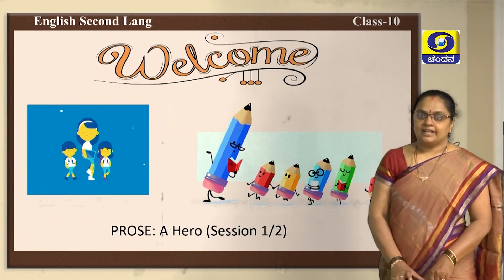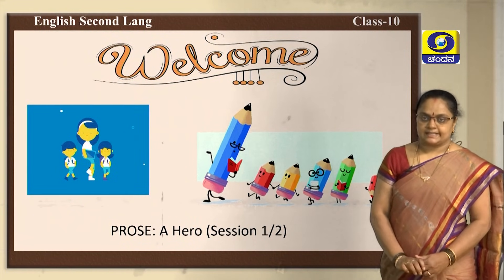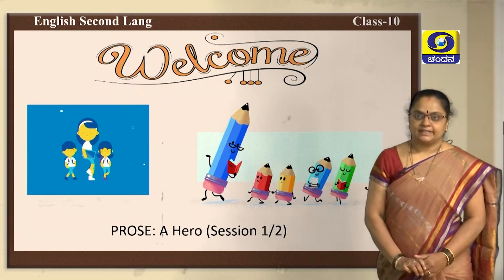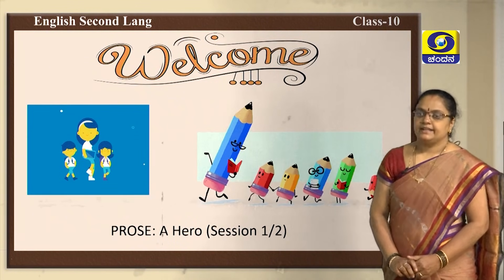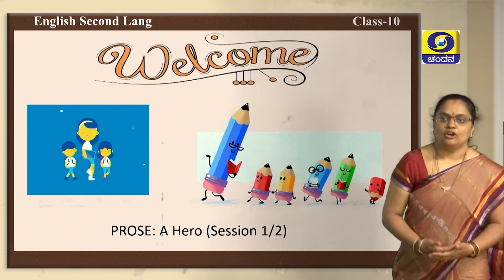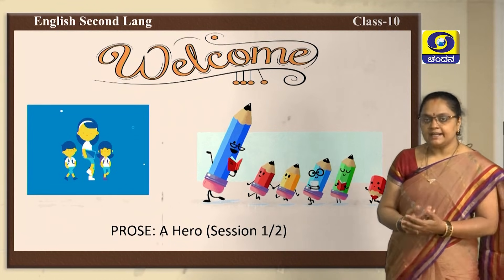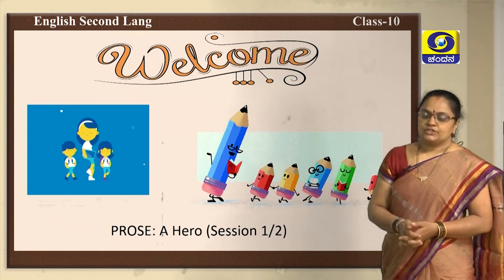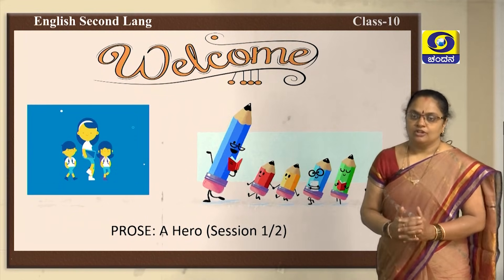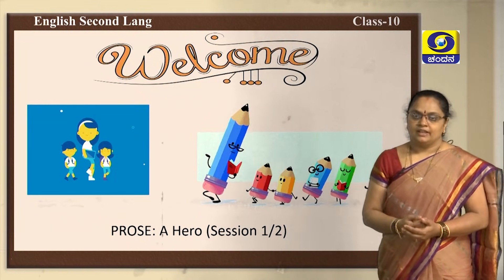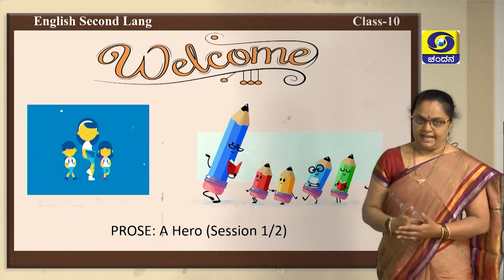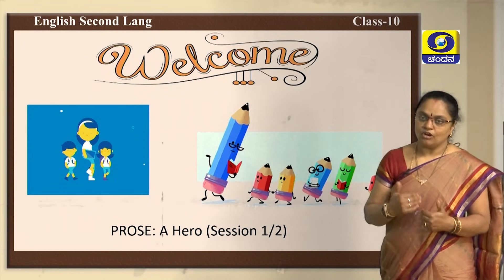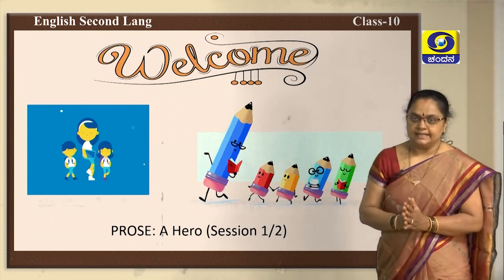Hello children, welcome back to today's class. I hope all of you enjoyed the poem 'Grandma Climbs a Tree.' In that poem, all of us came to know about the speciality of the poet Ruskin Bond's grandmother. So in today's class, we are coming across a boy who became a hero overnight. So how did he become a hero? That we will come across in today's lesson.